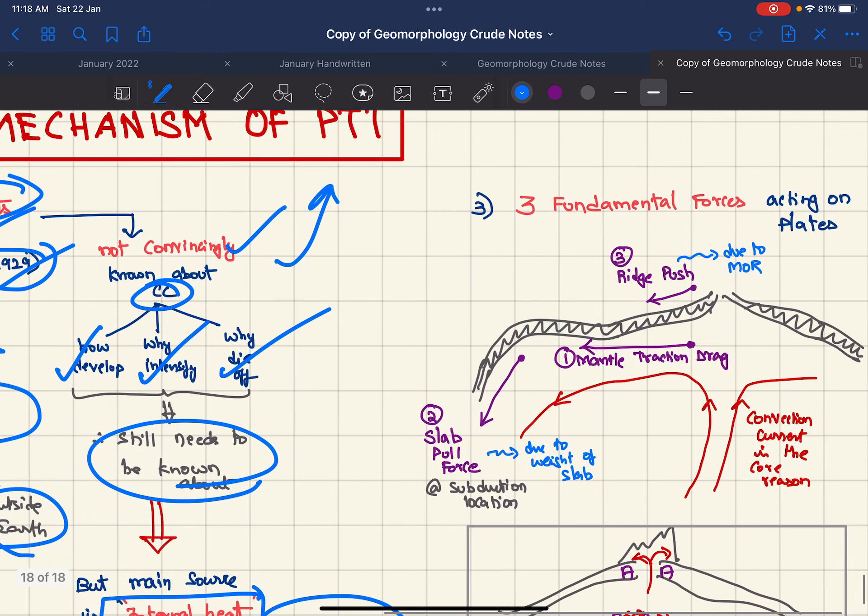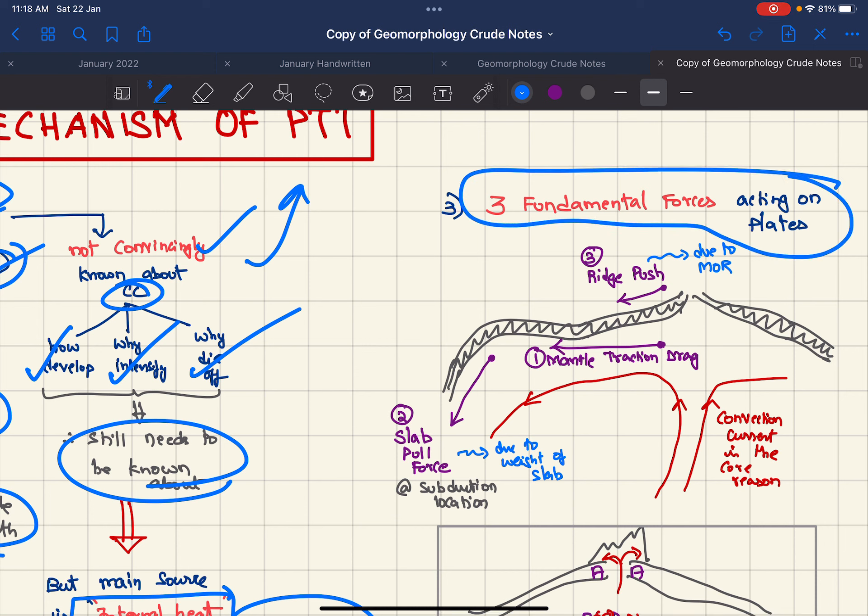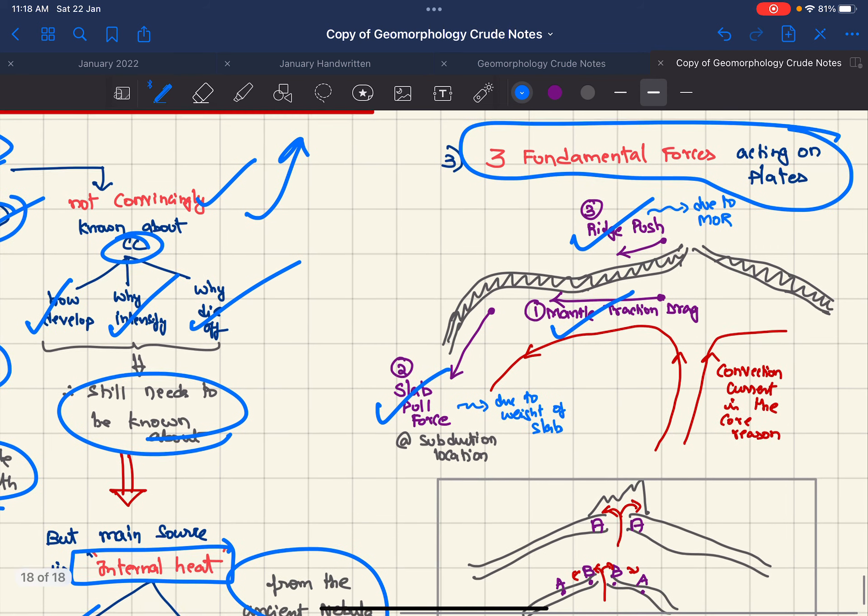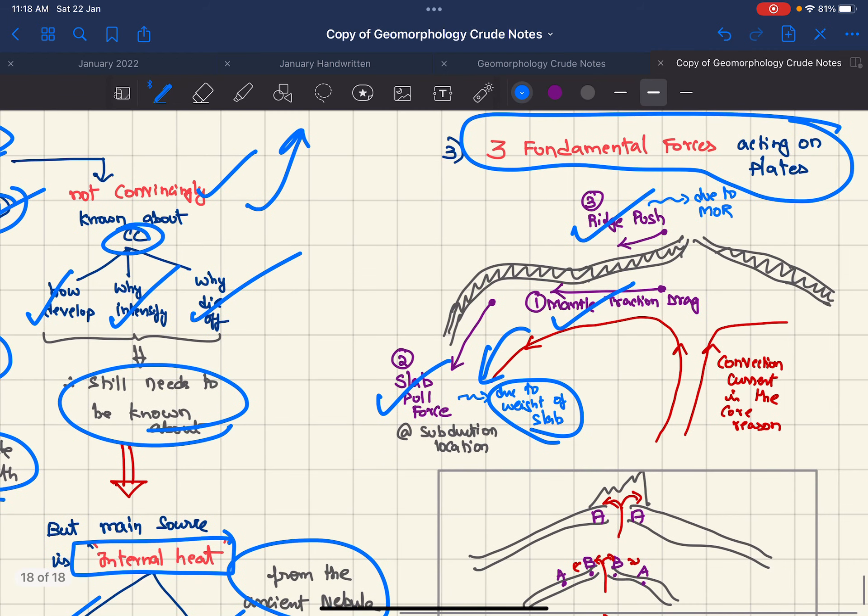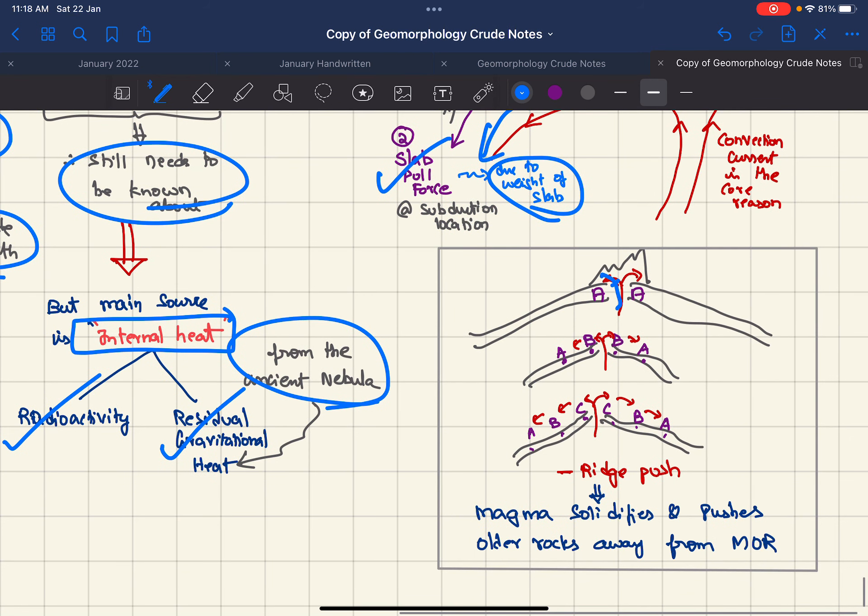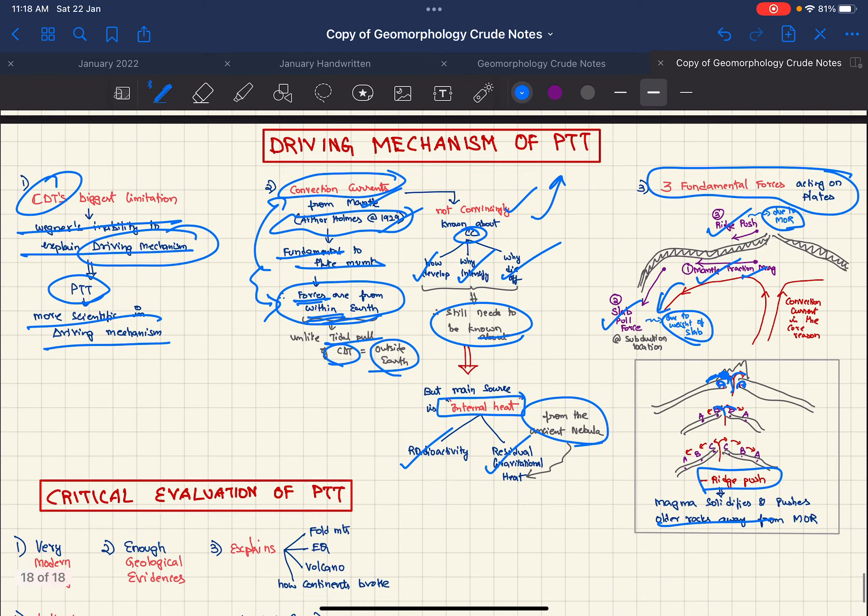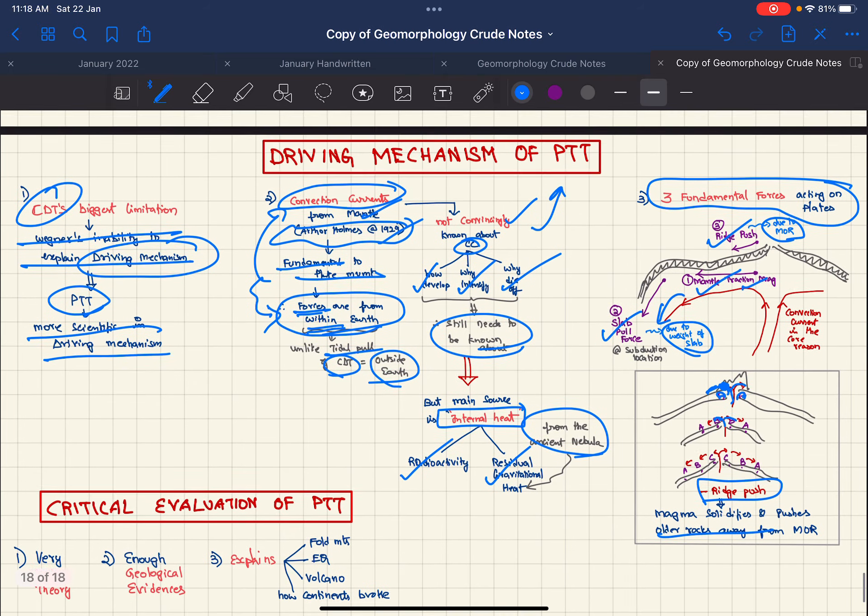Coming to the three fundamental forces acting on the plates, we have mantle drag traction, slab pull force, and ridge push. Slab pull force is due to the weight of the slab and the force from convection current limbs. Ridge push is due to mid-ocean ridge formation. Here we have magma solidification and new magma pushes this rock. These are the three fundamental forces acting on plates.